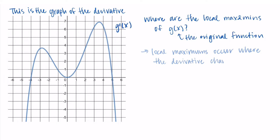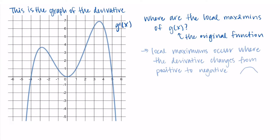Local maxes occur where the derivative changes from positive to negative — where the original function changes from increasing to decreasing. Looking at our graph of the derivative, we want to see where it crosses from above the horizontal axis to below it, changing from positive outputs to negative outputs. We see that this happens at x equals 5. At x equals 5, the output of the derivative is 0, which needs to be true for a local max or min. Because the derivative values change from positive to negative at x equals 5, this is the location of a local maximum on the original function g of x.